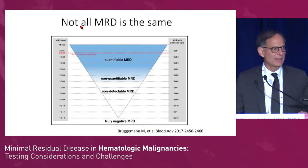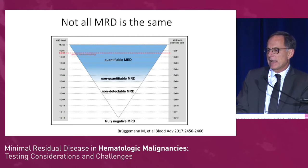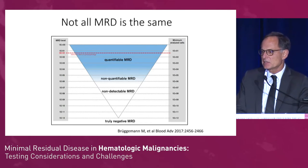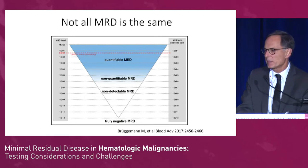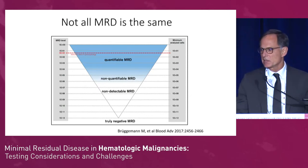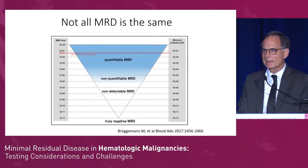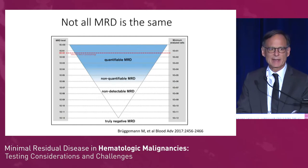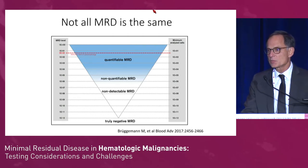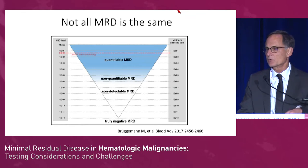I'm simply asking the question: is there a role for measuring MRD in CLL in clinical practice? Not all MRD is the same. There's disease that we can quantify, disease that we can detect but can't quantify, and then there's non-detectable disease at the bottom of the pyramid, which may still be disease — we just don't have the methodology to measure it. So when is a patient truly negative?